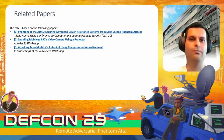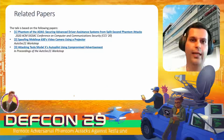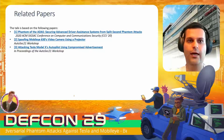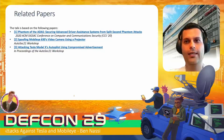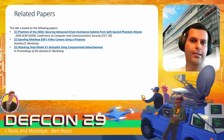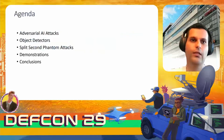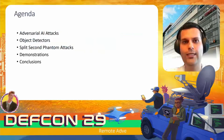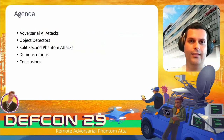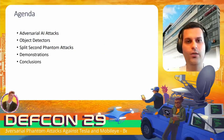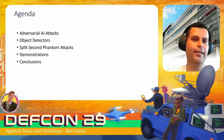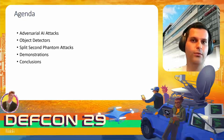This talk is based on three papers published during the last two years, one of which was accepted to ACM CCS 2020. The other two were accepted to AutoSec 21. Today's agenda: we will start by discussing adversarial AI attacks, then discuss object detectors, move on to split-second phantom attacks, see demonstrations, and end with some interesting conclusions.